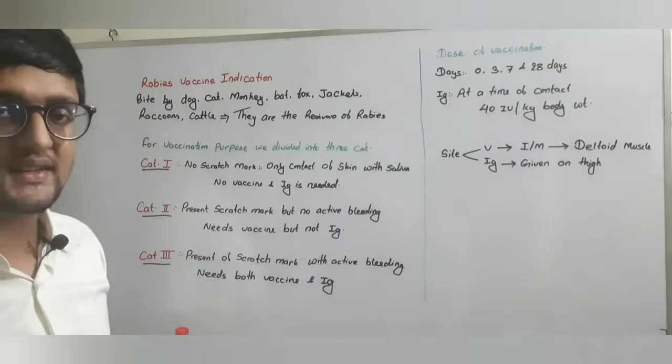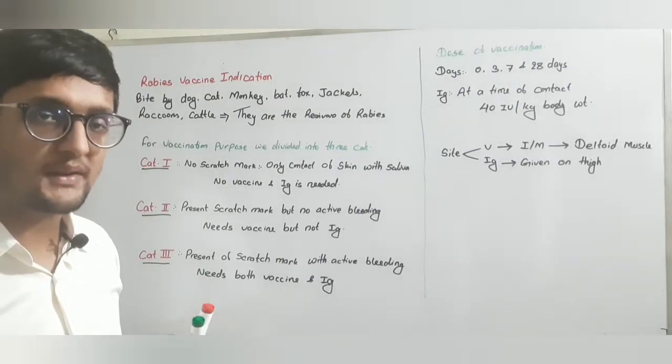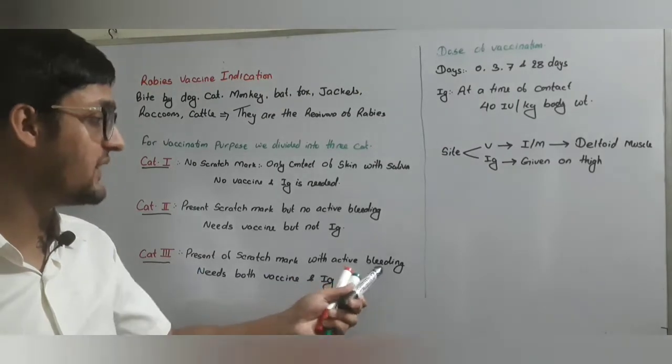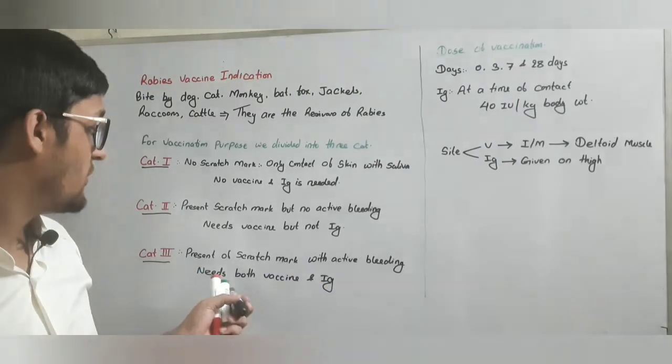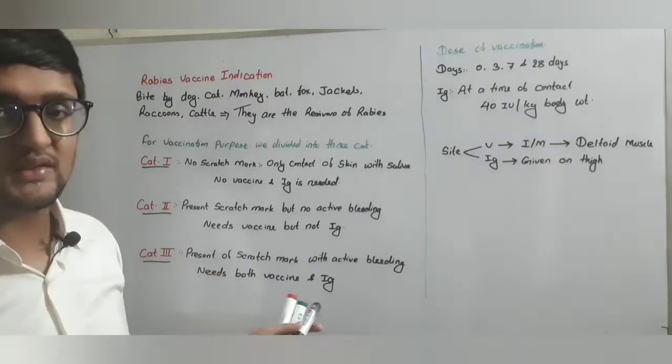In category three, there is presence of scar marks along with active bleeding. So, in this condition, we will give vaccine as well as immunoglobulin.